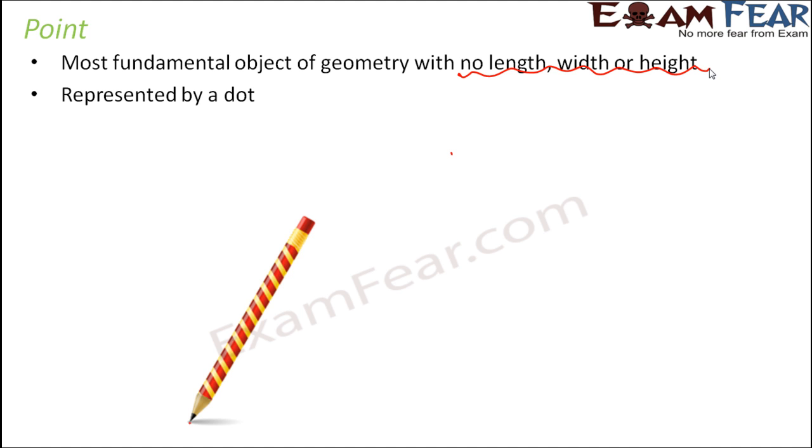It is represented by a dot. Take a pencil and touch the tip of the pencil on a white sheet of paper - you see a black dot that represents a point. Think of a tip of a pencil or the tip of a compass.